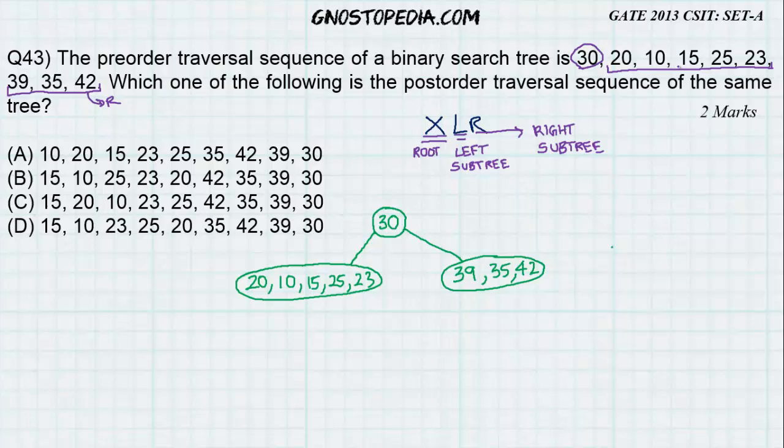Make sure you write the order of 20, 10, 15, 25, 23 exactly as it is in the left subtree.